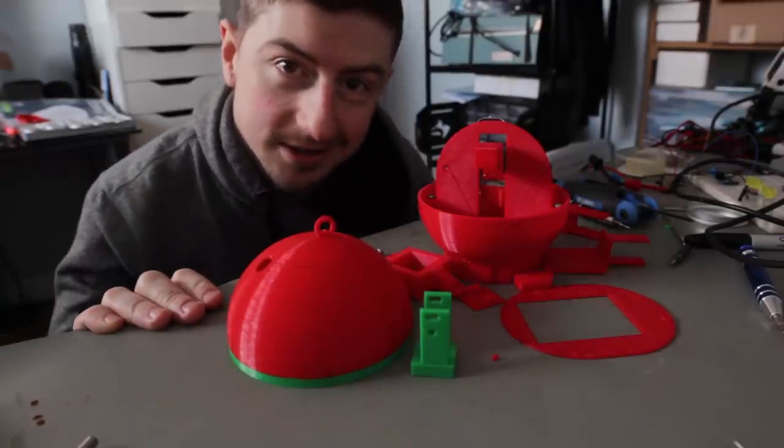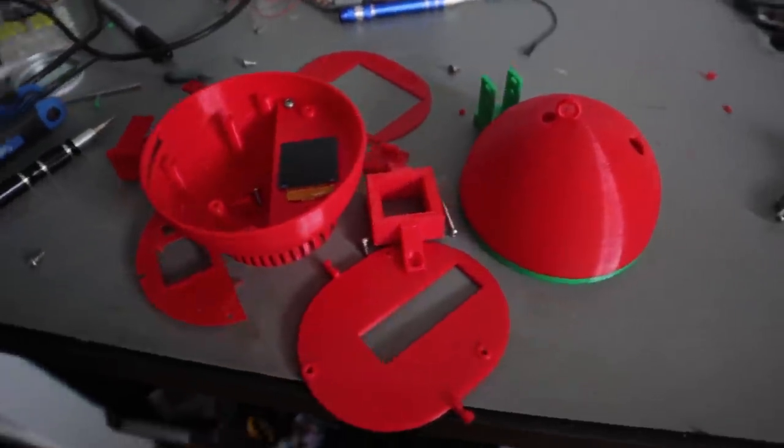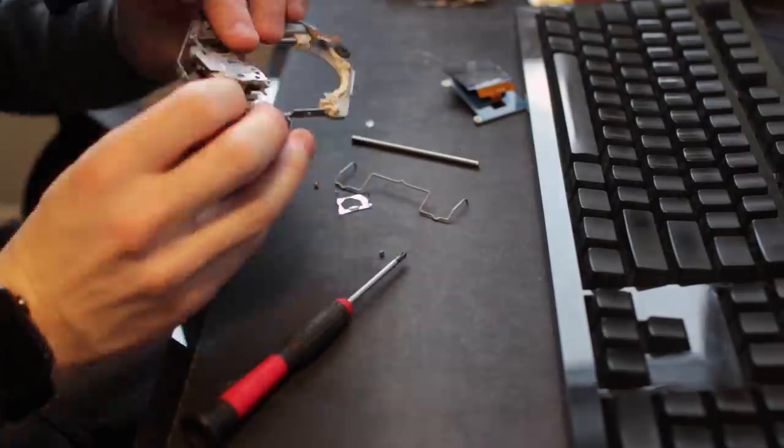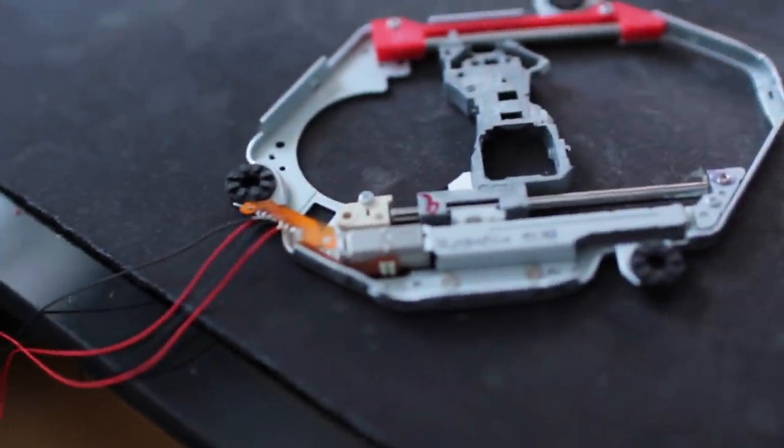First I designed and 3D printed a whole bunch of parts. This took forever. Next I took apart an old DVD drive and basically didn't need anything except for this little stepper carriage thing. I took all the parts off it and soldered some wires directly to the stepper motor.